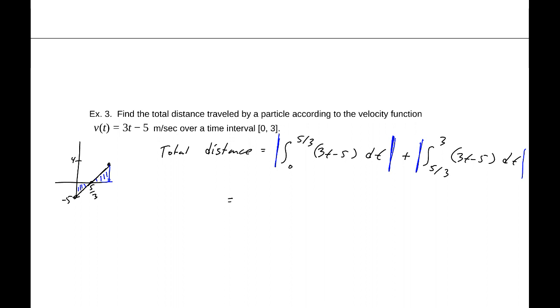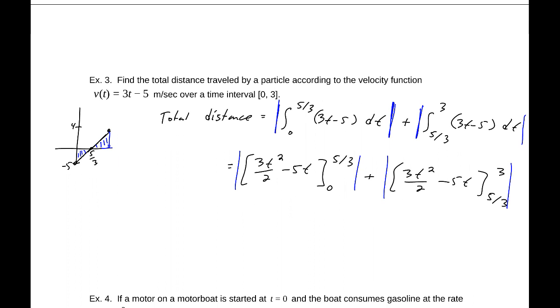So the antiderivative is 3t squared over 2 minus 5t evaluated from 0 to 5 over 3, and we'll take the absolute value of whatever we get there, plus 3t squared over 2 minus 5t evaluated at 5 thirds and 3. And we'll take the absolute value there. Now notice the second one is going to be positive based on our graph. The first one is the one that's going to be negative.